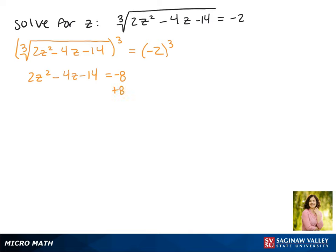We want to set this equal to 0 so that we can factor it, so we move 8 to the other side. We get 2z squared minus 4z minus 6 equals 0.